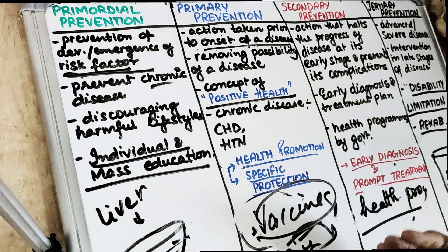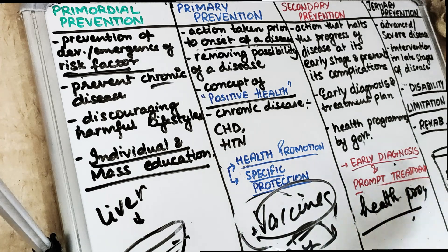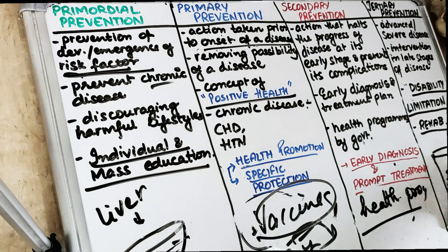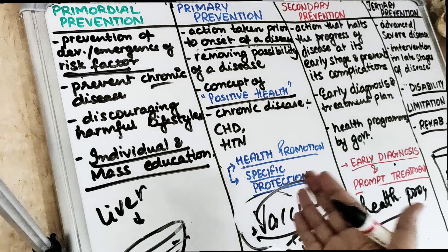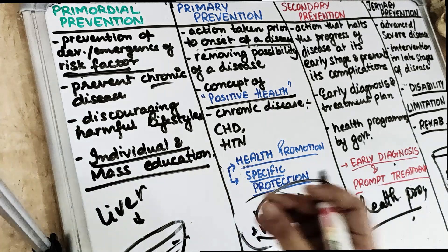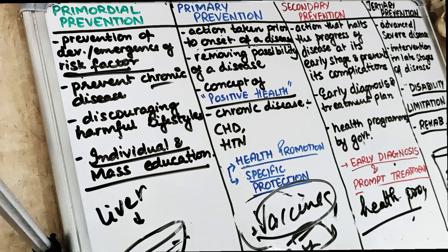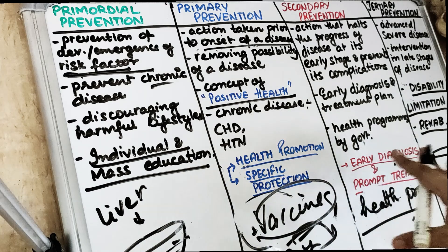Next comes tertiary prevention. Now the disease has advanced to its severe form — the disease progression is into the advanced stages, beyond the early stages. Prevention at the early stage was at the secondary level. The tertiary level is when the disease has progressed to its advanced or severe stage. It is still possible to accomplish prevention at the tertiary level by doing intervention in the late stages of the disease.